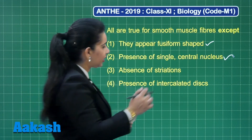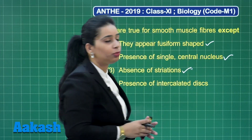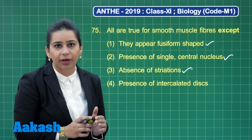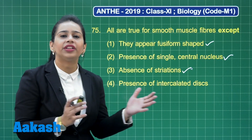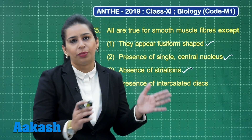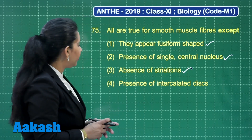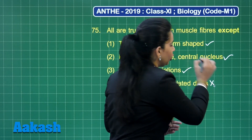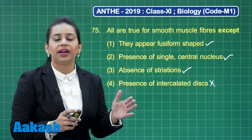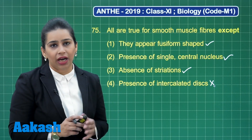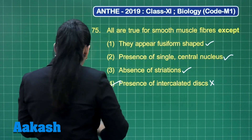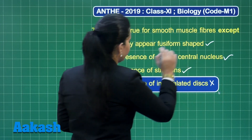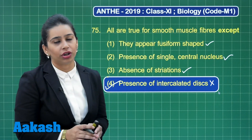The third option — absence of striations — is very much correct about smooth muscles, because striations are present in skeletal and cardiac muscles where alternate dark A and I bands are present, which are not present in smooth muscles. The fourth option — presence of intercalated discs — is certainly not a character of smooth muscles; this is a characteristic feature of cardiac muscles. So the correct answer is option number 4, as this statement is not true about smooth muscles.